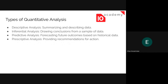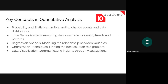There are a lot of types of quantitative analysis. Here are some of them: descriptive analysis summarizes and describes data, giving insights and descriptive information. Inferential analysis draws conclusions from a sample of data. Predictive analysis forecasts future outcomes based on historic data — for example, using historical stock data we can develop a model to forecast. Prescriptive analysis provides recommendations for action. Key concepts include probability and statistics — understanding the chance of events and data distribution is key in quantitative analysis.